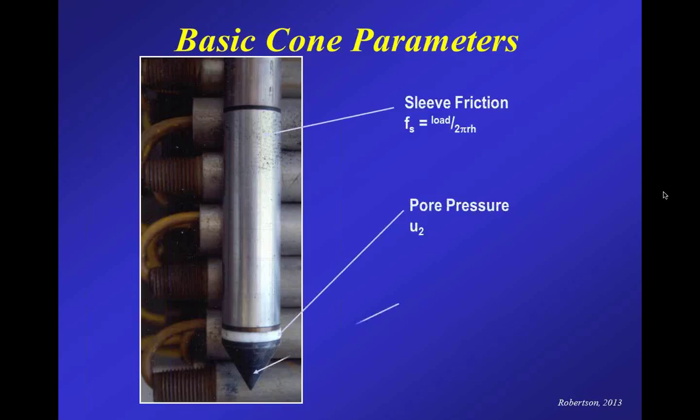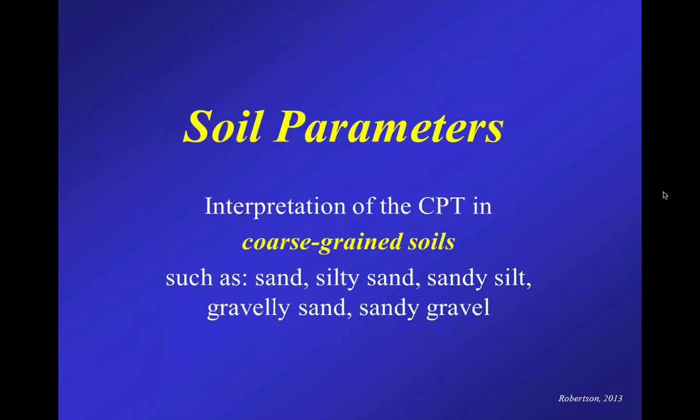As a reminder of what the cone penetration test is and what it collects: you've got three basic measurements. The standard electric cone nowadays measures tip resistance, sleeve friction, and pore pressure in a continuous manner while it's pushed into the ground at a standard rate of two centimeters per second. It's not strictly continuous nowadays because it is digitized usually every one or two centimeters, so data is collected roughly every one or two centimeters while you push the probe into the ground.